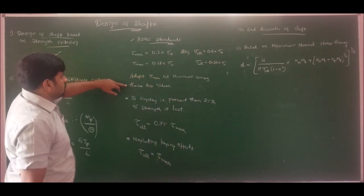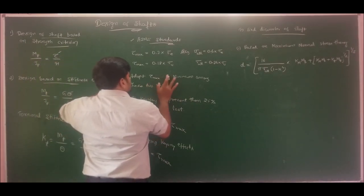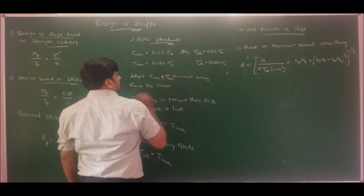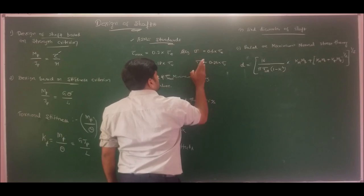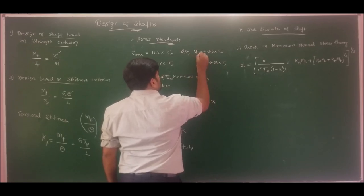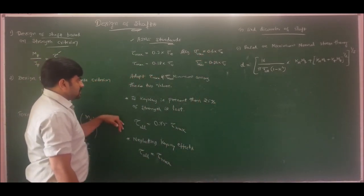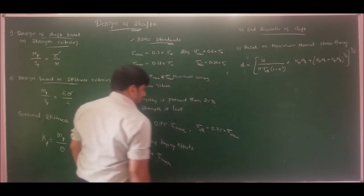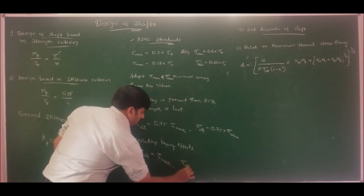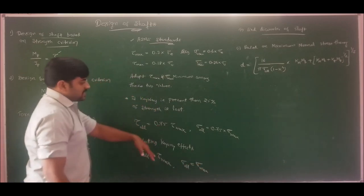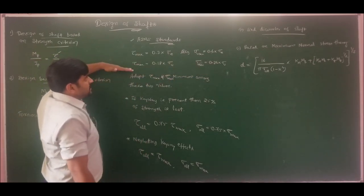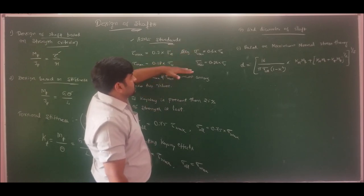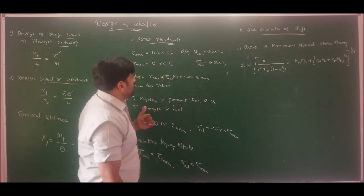We should adopt σ_max as the minimum among these two values per ASME standards. If keyways are present, 25% of strength is lost, so σ_allowable = 0.75 × σ_max. If keyway effect is neglected, σ_allowable = σ_max. If σ_max is not specified, use: σ_max = 0.6 × σ_elastic or 0.36 × σ_ultimate; adopt the minimum value.